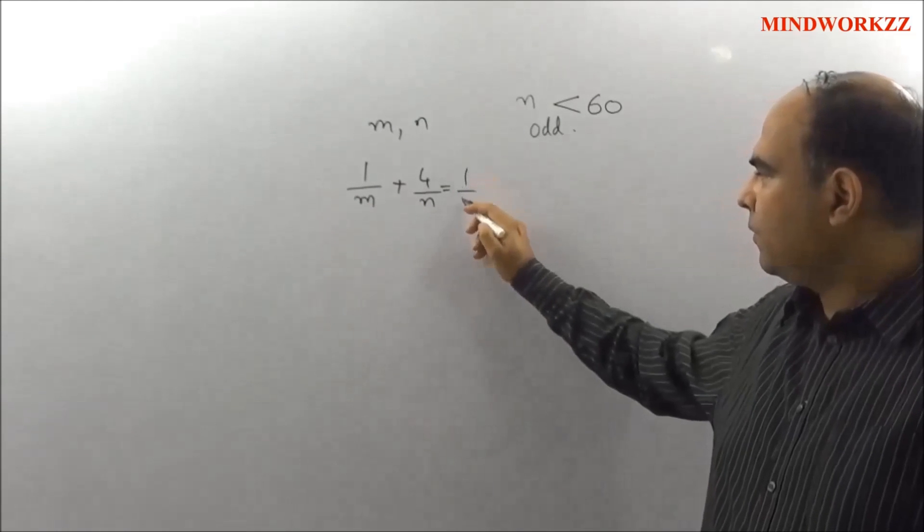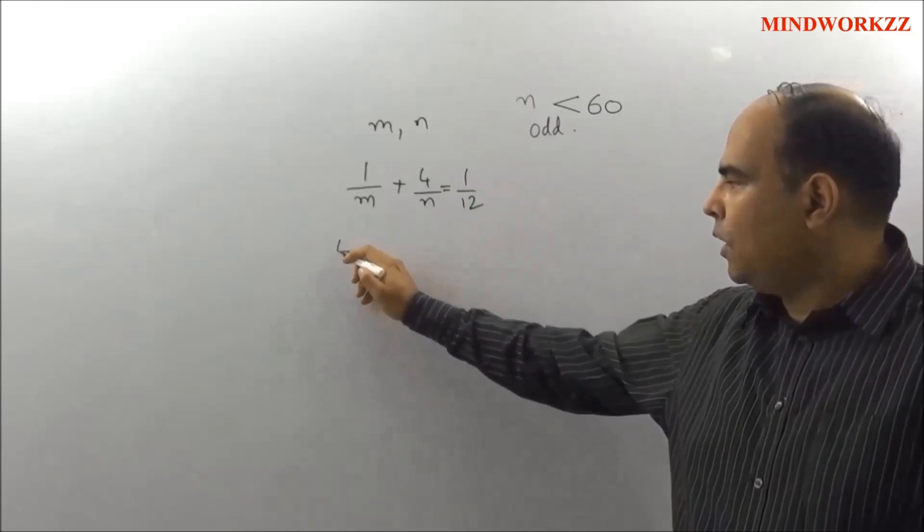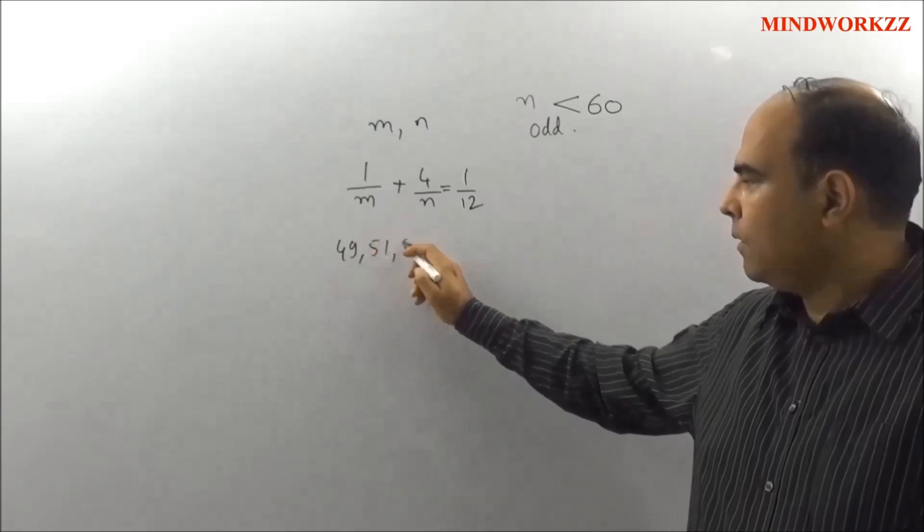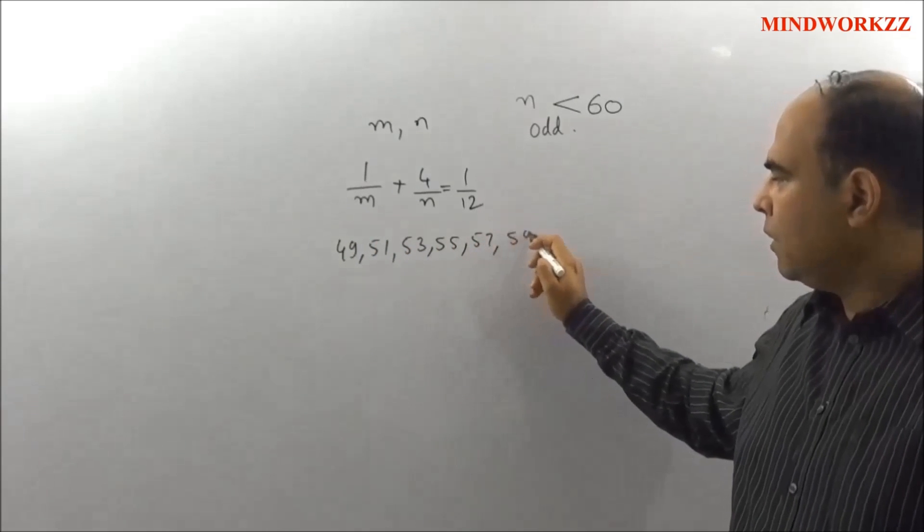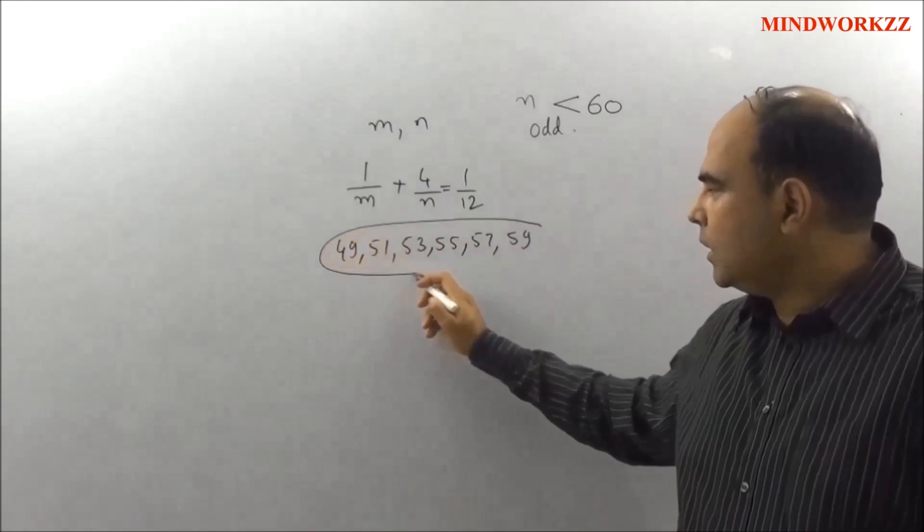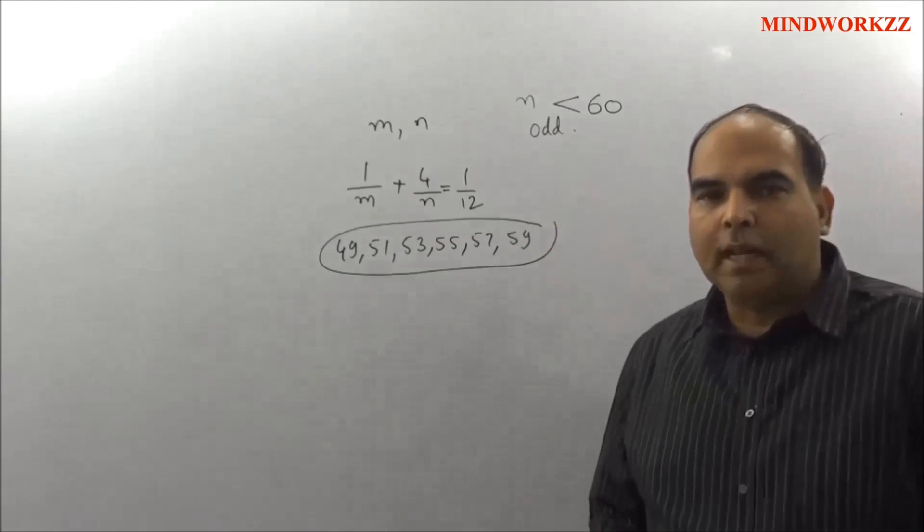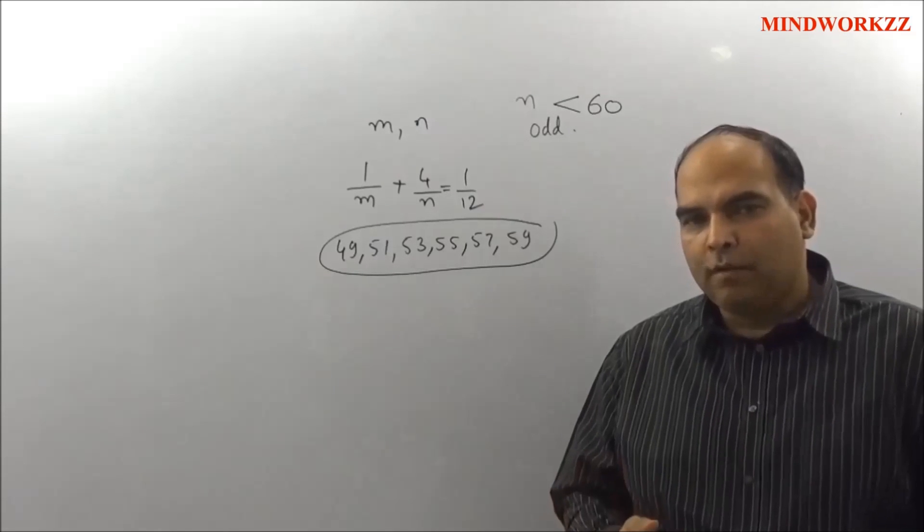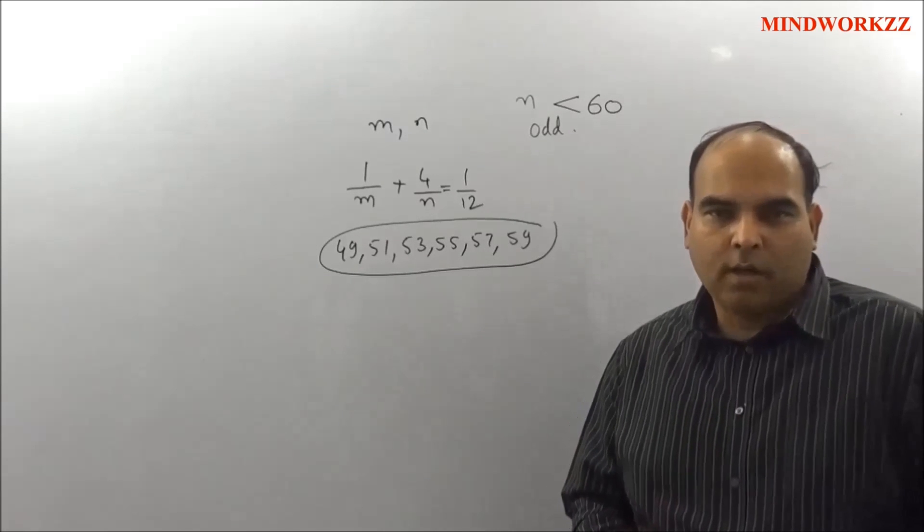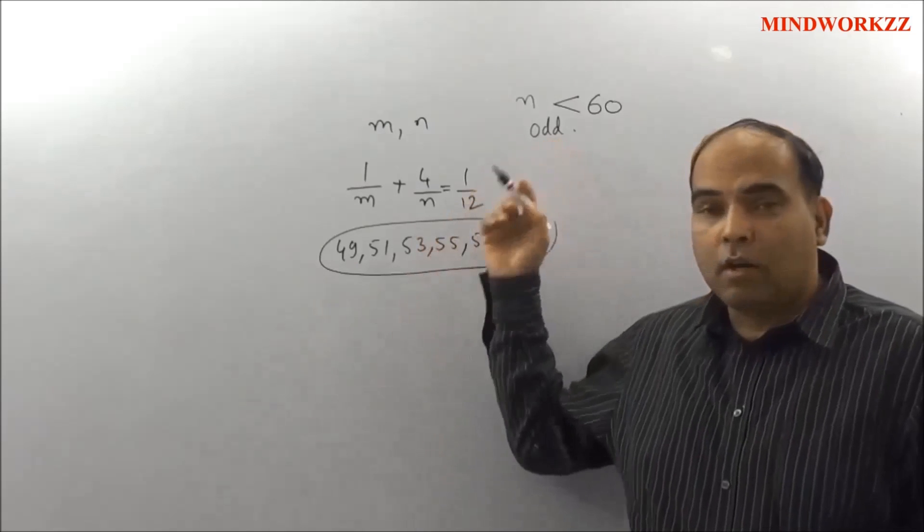The possible values of n are only 49, 51, 53, 55, 57, or 59. These are the only 6 physical values that n can take in this situation, because below 47 or 48 n does not work, and above 60 n is not allowed.